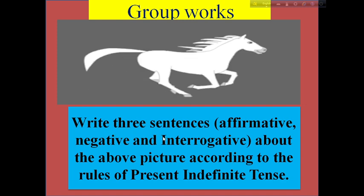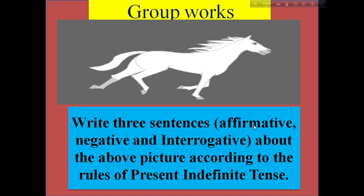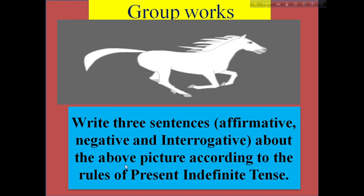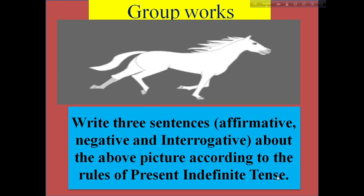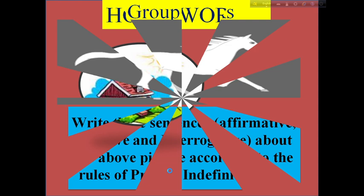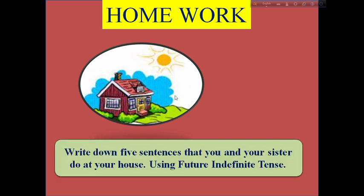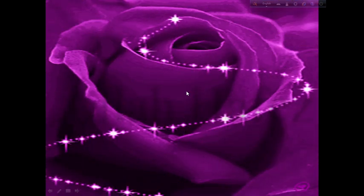Dear students, look here. Write three sentences — affirmative, negative, and interrogative — about the picture according to the rules of future indefinite tense. And this is your homework: write down five sentences that you and your sister do at home using future indefinite tense. Thank you very much. Love us.